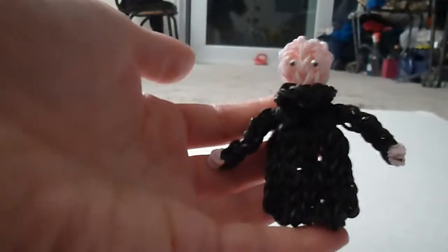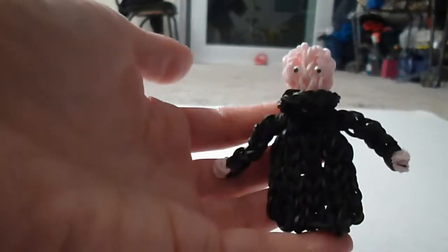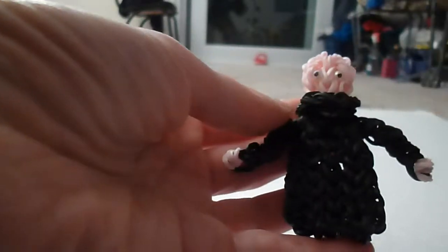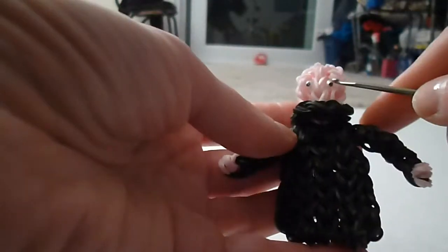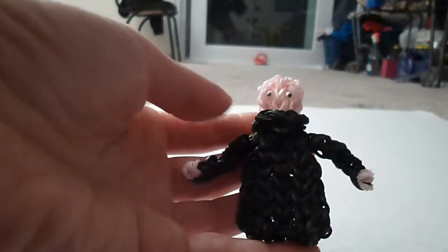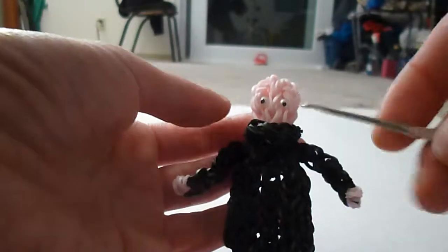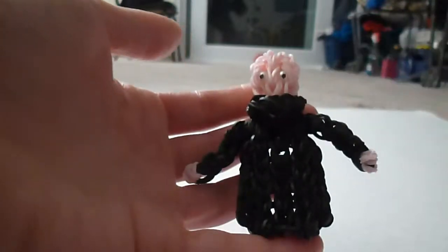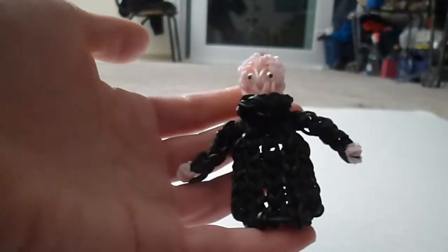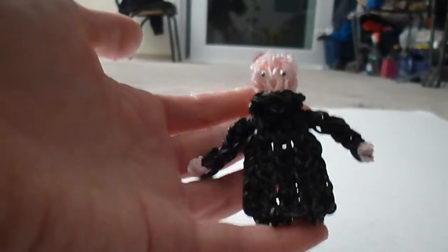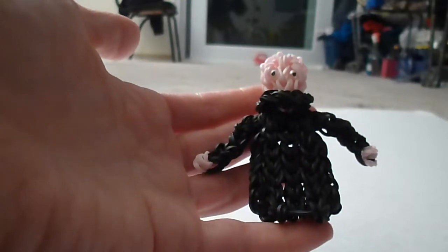For this pattern you're going to need skin tone bands, beads or bands for the eyes. I'm using white beads with a black sharpie marker to draw on the pupil. And for the outfit you can use black or brown, which is what I'm going to do in this video. So you'll see them both in the thumbnail, and you also have the option of using grey if you'd like.